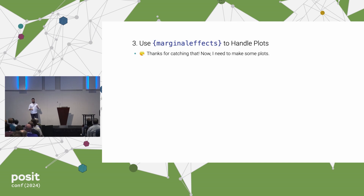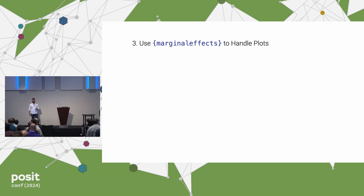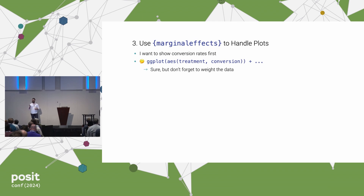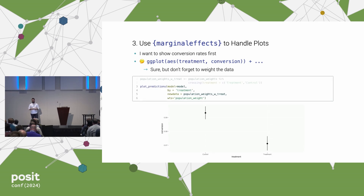My colleague then said: I need to make some plots — I need to convey this to my stakeholder visually, not just math. I agreed, and said marginal effects can do that too. My colleague wanted to show the conversion rates first: treatment on the x-axis, conversion rate on the y. I reminded them the experiment data is biased and needs weighting. Instead of computing all these weighted means manually, you can use the plot_predictions function, passing the model, specifying treatment for the x-axis via the 'by' argument, and applying the same weighting as in the average_comparisons call. You get conversion rate on the y-axis with confidence intervals — always good to communicate uncertainty.